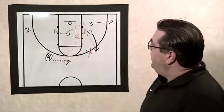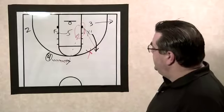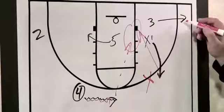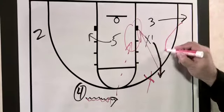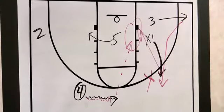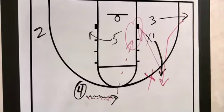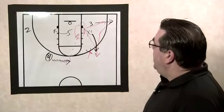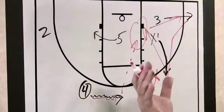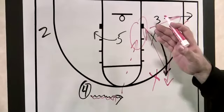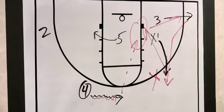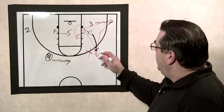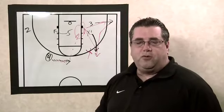As soon as number one makes the backdoor cut, sensing the pressure, the dribble pickup is always effective on backdoors. When X3 senses that, he's going to make an immediate cut and replace number one so we can stay in our offense. If X1 doesn't get the basketball, he's going to pop out to where number three was. If one doesn't get the basketball, they're going to pop out to the corner. Now you see three has replaced on top and we can continue our offense from there.